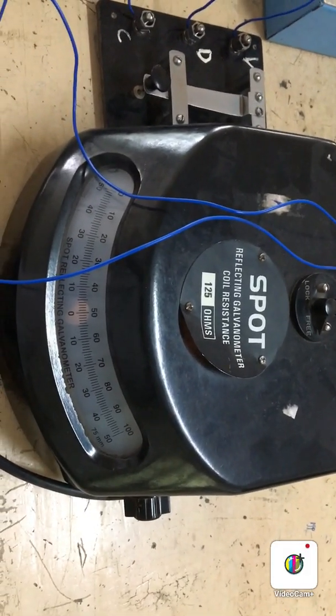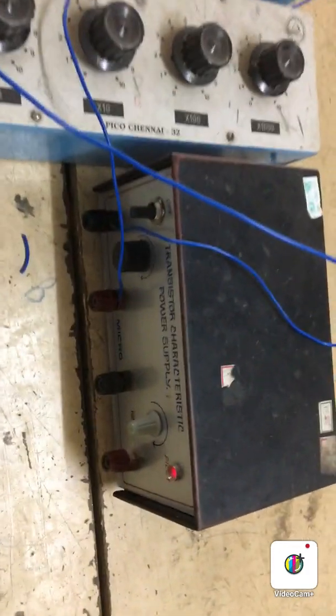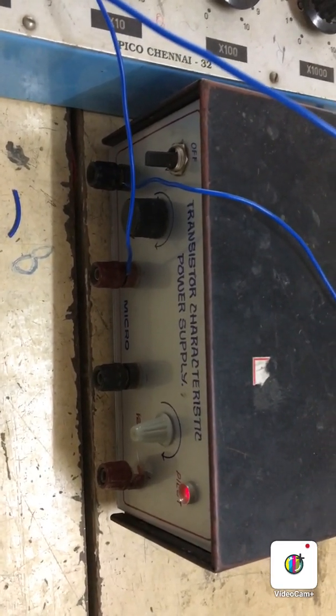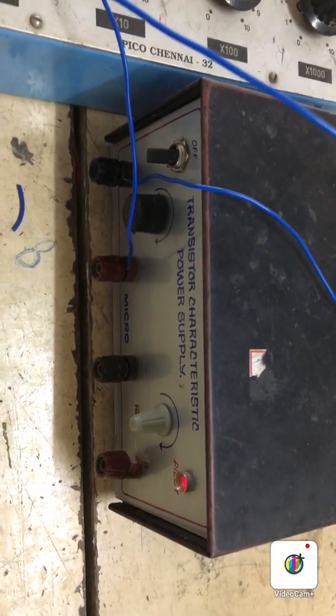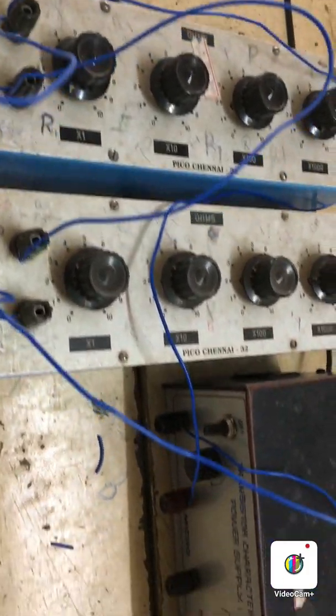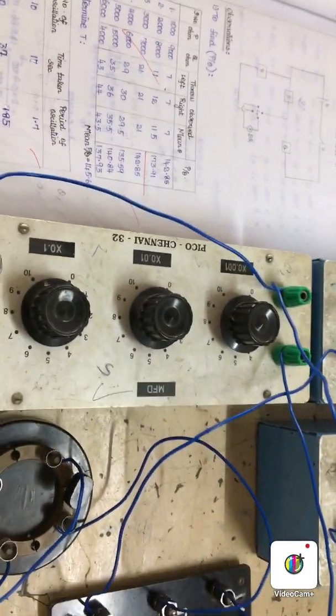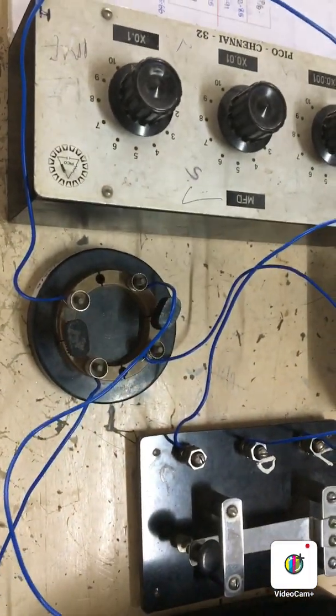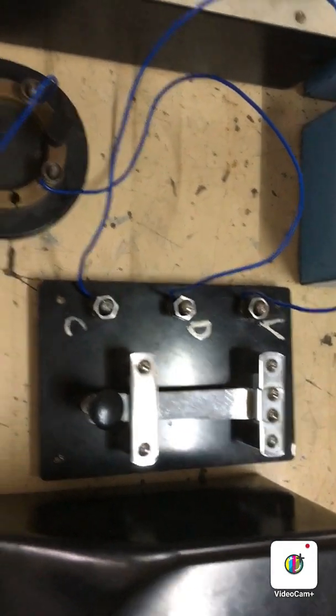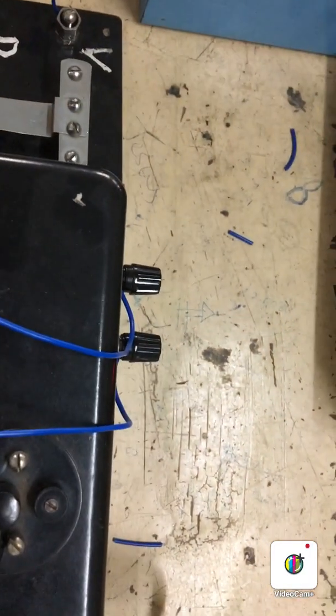This is the given BG for which we are going to determine the charge sensitivity. This is the power supply with voltage set close to 1.5V. Resistance boxes P and Q are connected as shown in the circuit, capacitor C is connected, this is the commutator, and this is the charge discharging and vibrator key. From the commutator, the BG is connected as shown.